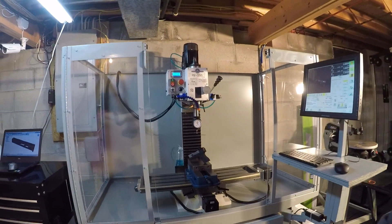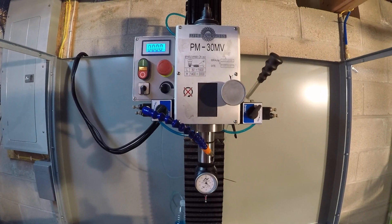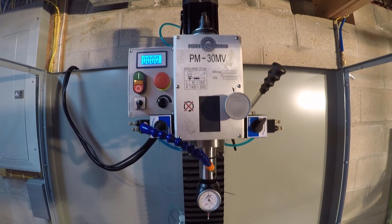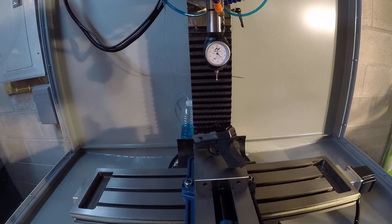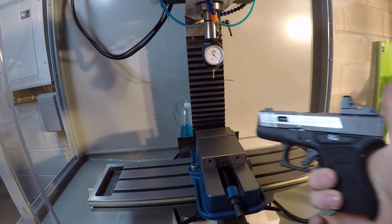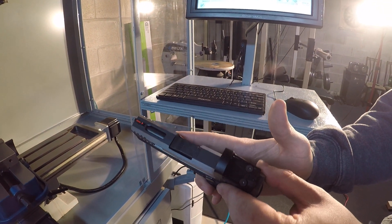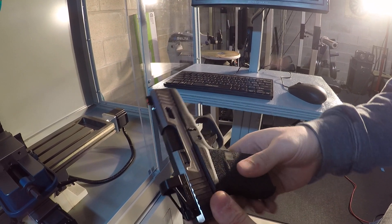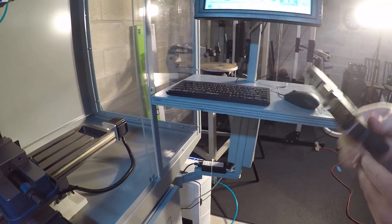So this is the PM30MV from Precision Matthews. I picked this up about four or five months ago. That's when it finally came in at least. And for those of you that don't know, I am building a CNC milling machine or have built a CNC milling machine because I mainly do custom work on firearms, mostly for myself. But that was the reason that I started getting into milling to begin with.